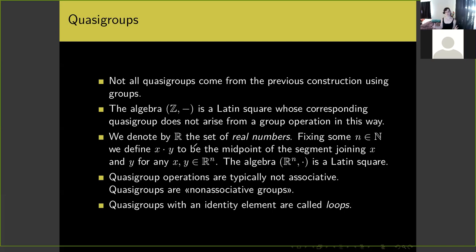Quasi-groups are more general than groups — there are more quasi-groups in a certain sense. Quasi-group operations are typically not associative, so quasi-groups can be thought of as non-associative versions of groups. If we want something that more closely approximates a group without associativity, we can consider quasi-groups with identity, which are called loops. All groups are loops, but there are still many loops which are not groups, and there is quite a mature theory of loops that parallels but is distinct from group theory.